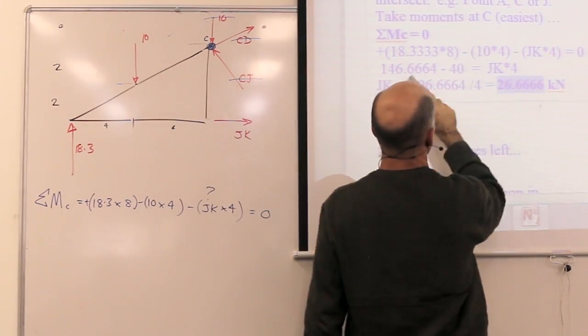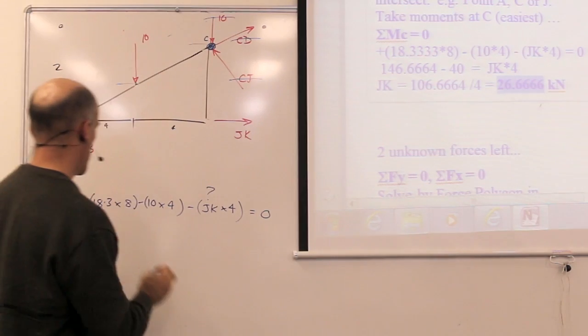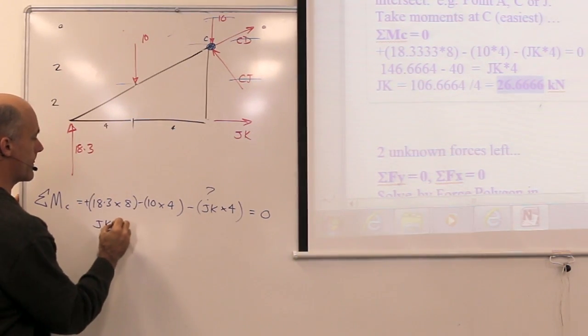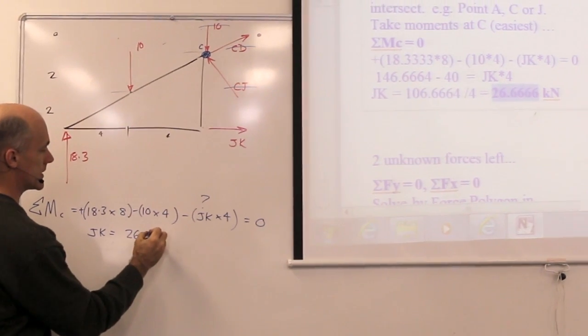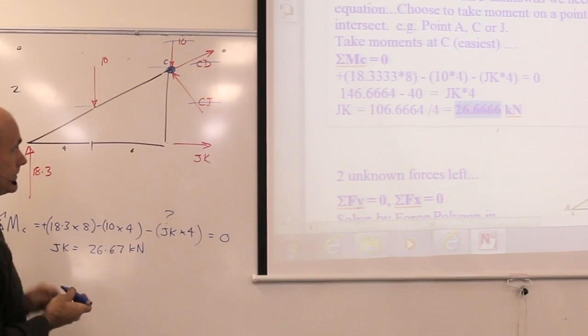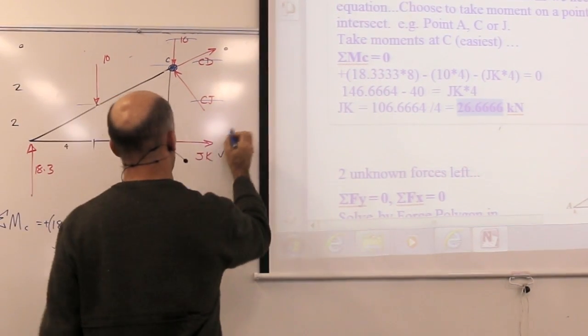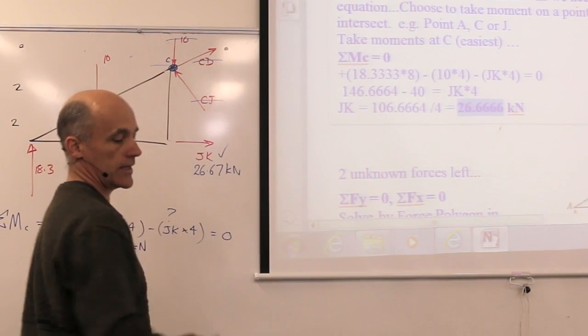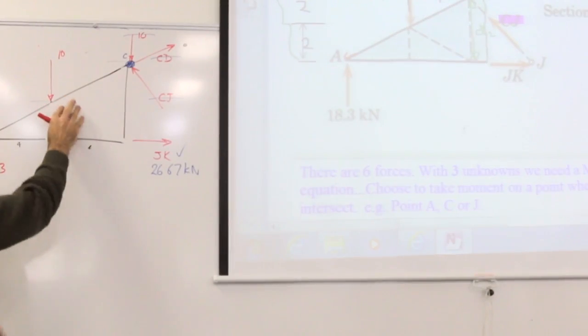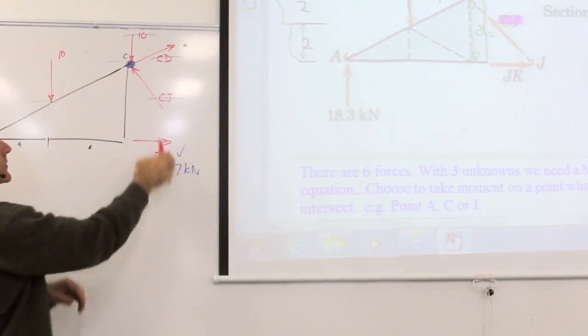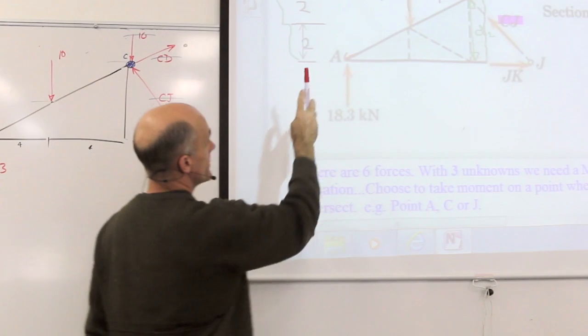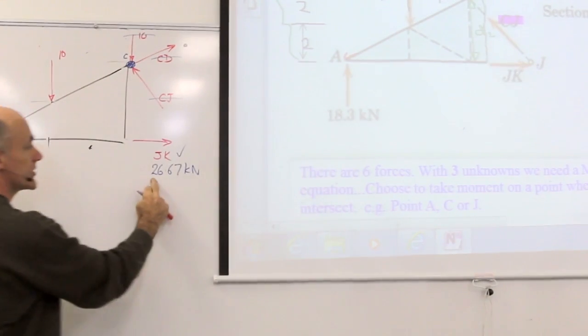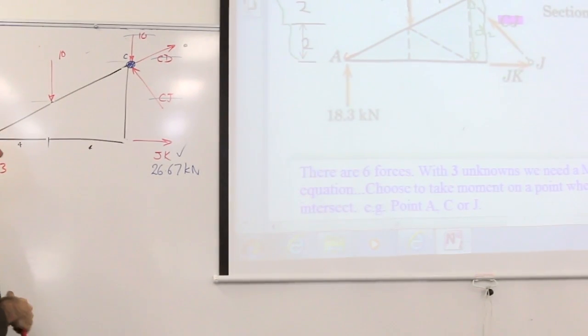And when we do the moment equation, we end up with an answer of the force JK equals 26.67 kN. So we've solved one here, 26.67 kN for JK. Now I've solved one of the forces out of those three. I jump straight from the truss into the middle, and I've solved JK directly without using joint-to-joint method.